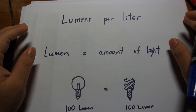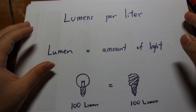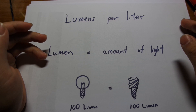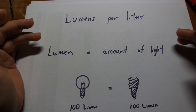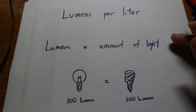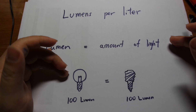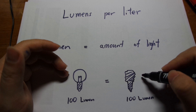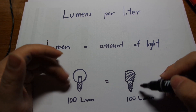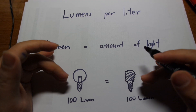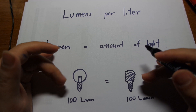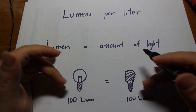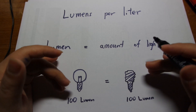The second concept is a slight improvement upon watts per gallon: lumens per liter or lumens per gallon. Lumen is not a unit of power used — it's a unit of actual light output. So a 100-lumen incandescent bulb and a 100-lumen compact fluorescent, despite the fluorescent using way less electricity, produce about the same actual amount of light. This gets rid of the first problem of different bulb efficiencies. However, lumens per liter is still subject to the same problems with reflectors and distance.